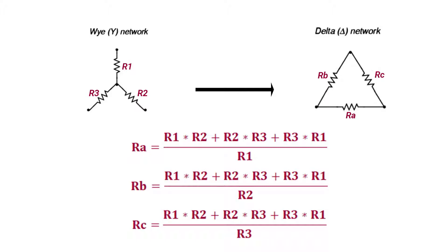To convert star configuration to delta configuration, just follow this formula. Ra will equal R1 times R2 plus R2 times R3 plus R1 times R3, over R1. Rb will equal R1 times R2 plus R2 times R3 plus R1 times R3, over R2. Rc will equal R1 times R2 plus R2 times R3 plus R1 times R3, over R3.